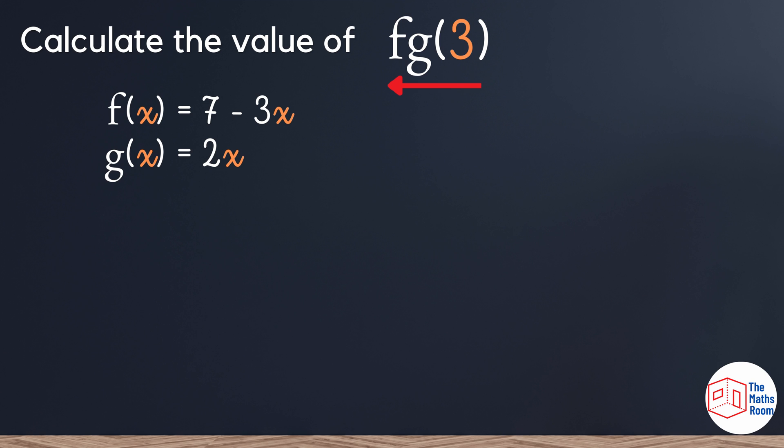So we're going to start by looking at g of 3. When doing this, it's exactly the same as substitution. All you need to do is wherever you see an x, replace that with a 3. So 2 times 3 is 6.